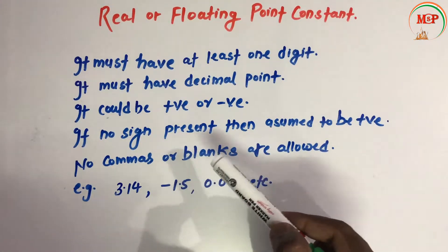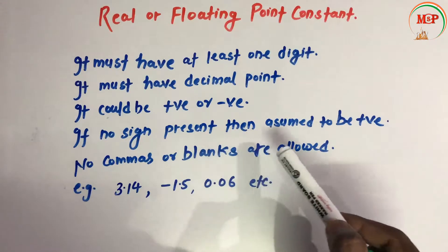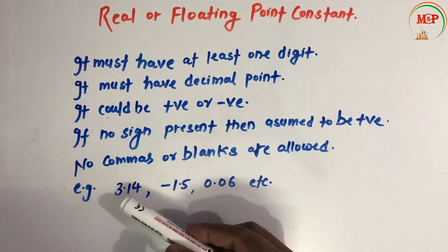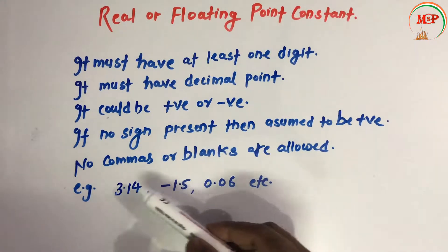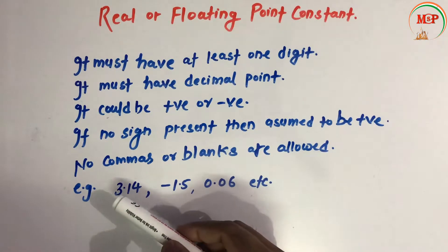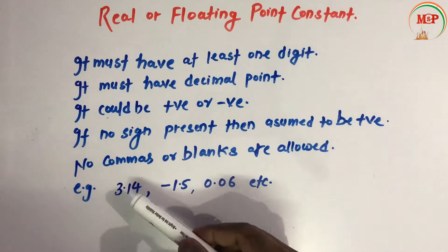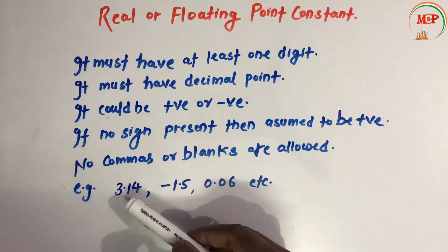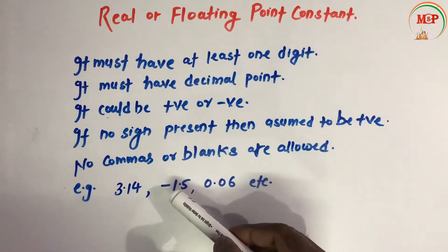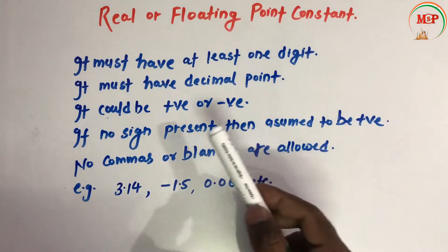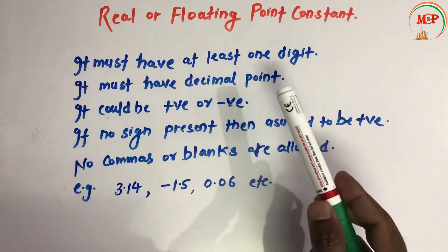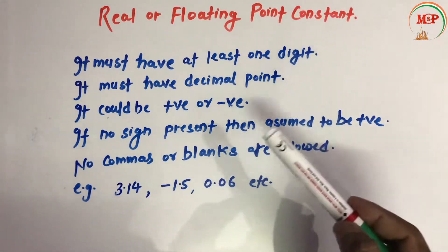Examples: 3.14 is a positive real constant, -1.5 is a negative real constant, and +1.5 is a positive real constant. These are the real or floating point constants in C language.